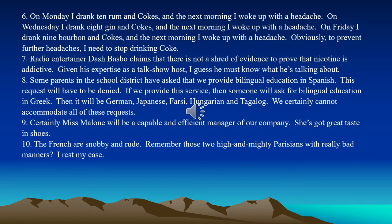Number six: On Monday I drank 10 rum and cokes, and the next morning I woke up with a headache. On Wednesday I drank eight gin and cokes, and the next morning I woke up with a headache. On Friday I drank nine bourbon and cokes, and the next morning I woke up with a headache. Obviously, to prevent further headaches, I need to stop drinking Coke. Well, it's not the Coke that's causing the headaches — it's all the alcohol you're adding to it. So this is an example of a false cause fallacy. You have an effect — the headaches — but you've attached it to the wrong causal mechanism.